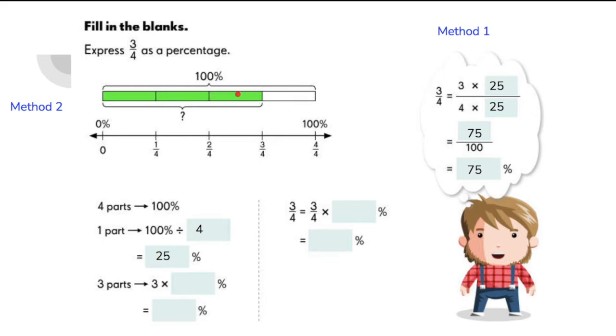Now remember, we are looking for 3 fourths of the whole. So if we want to get 3 parts, we just need to multiply 3 times 25% and this will give us 75%. Do you notice that we got the same answer as method 1?